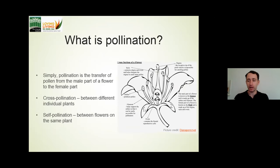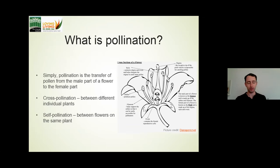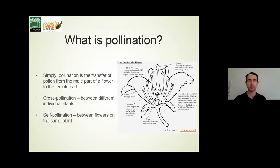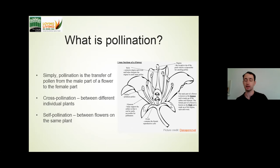I just want to touch briefly on what pollination is. Simply speaking, it's the transfer of pollen from the male part of the plant to the female part — from the anther to the stigma. That's a very simplistic view of pollination. We can cross-pollinate between flowers and different plants. Cross-pollination is essentially sexual reproduction — the transfer of male gametes from one plant to the female area of another.